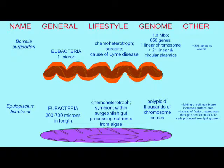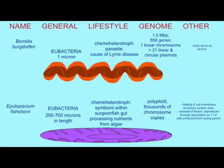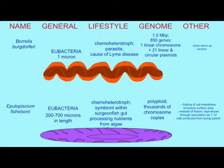Epulopiscium has thousands of copies — perhaps even tens or hundreds of thousands of copies — of its chromosome, making it polyploid. This allows it to be so large.